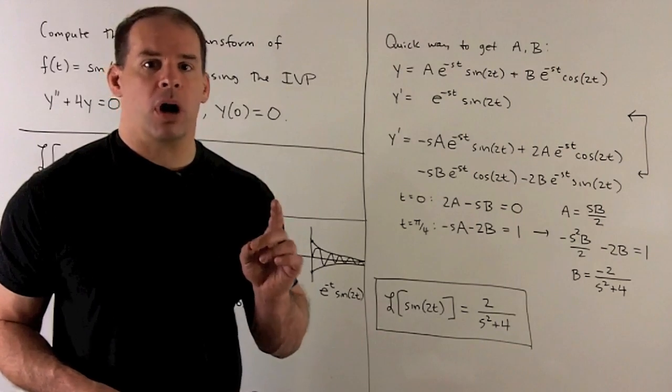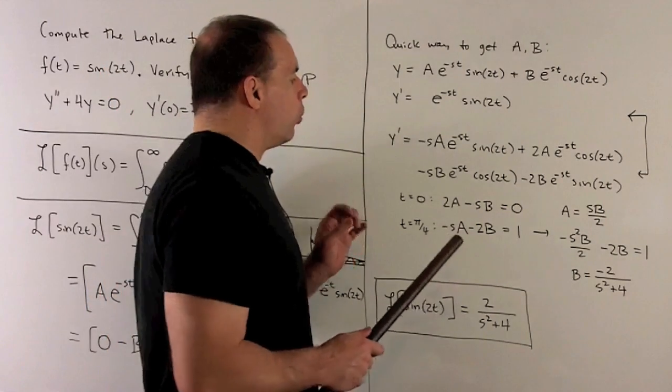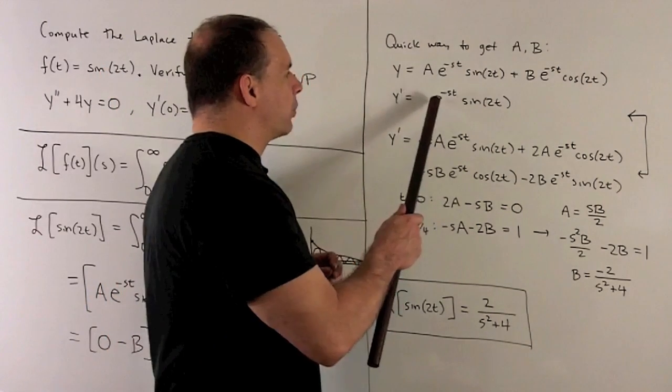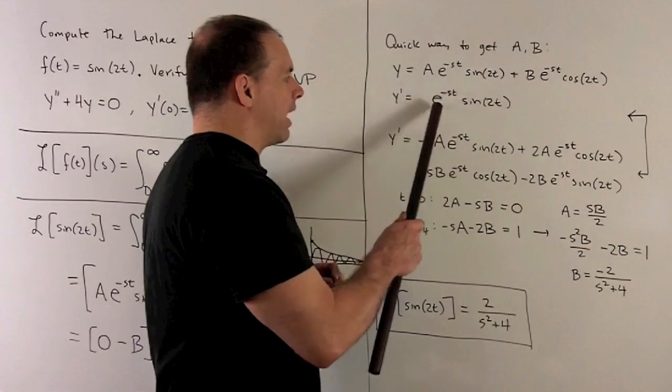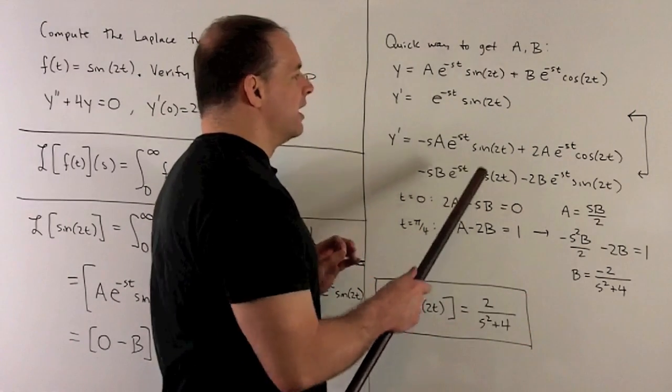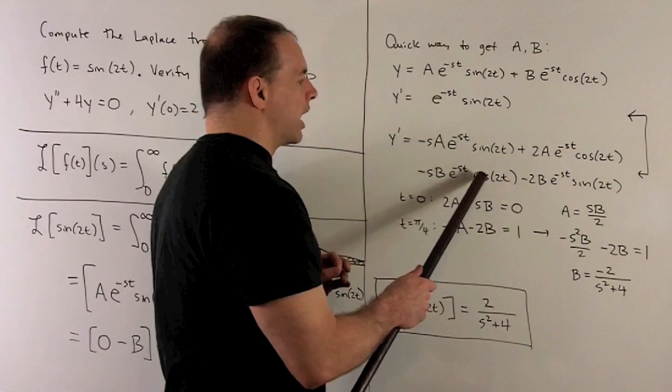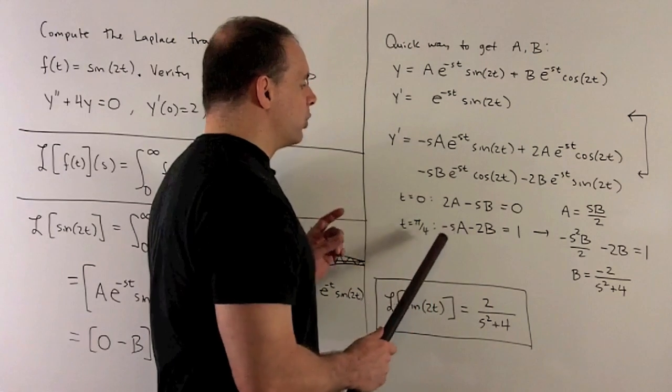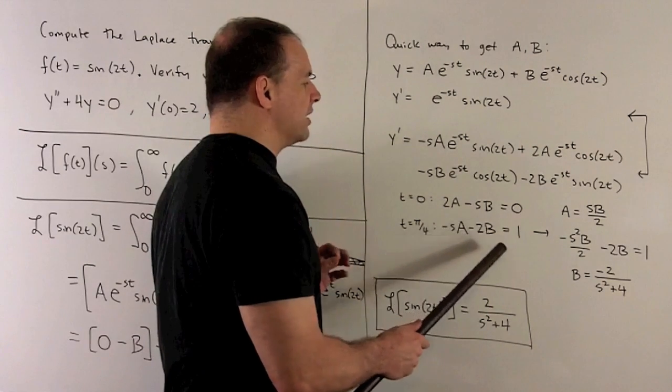If I let t be equal to pi over four, one thing I can do first is divide through by all the e to the whatevers, so they'll be gone. And then, sine is going to go to one. Cosine goes to zero. So, I'm going to be left with minus s a minus 2b is equal to one.